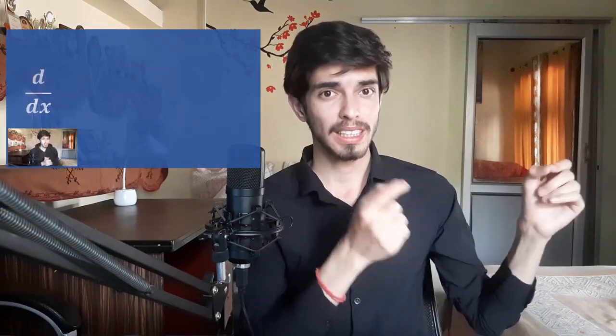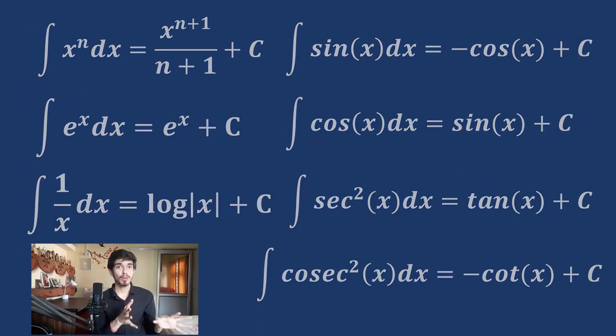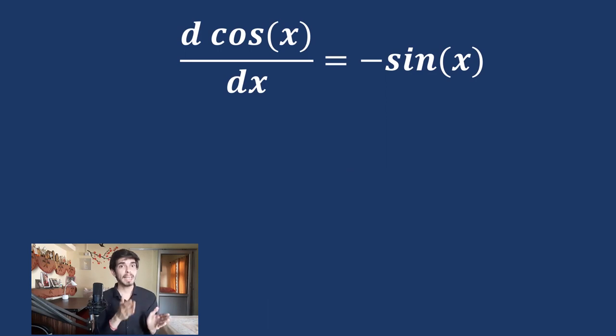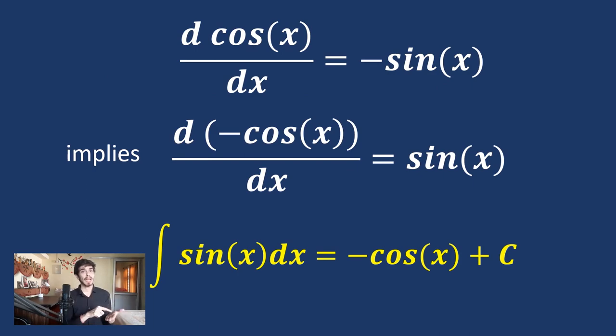Integration and differentiation are closely related — they are two sides of the same coin. If you have seen those videos, you know that integration is just the opposite of differentiation. So the good thing is that we don't need to memorize the integration formulas one by one. These formulas are just the opposite of differentiation. For example, the differentiation of cos x is minus sin x, so the integration of sin x will be minus cos x — and always remember to add the constant c.